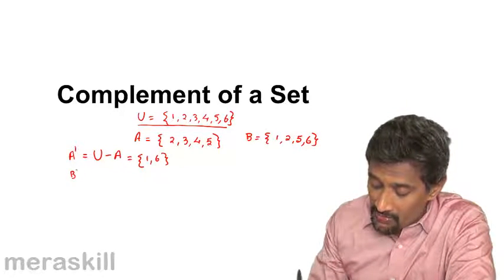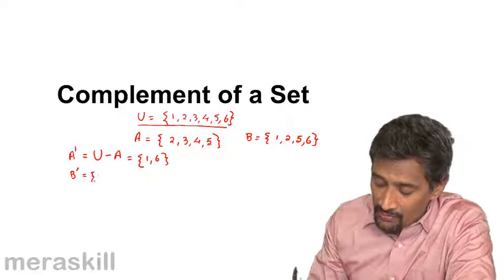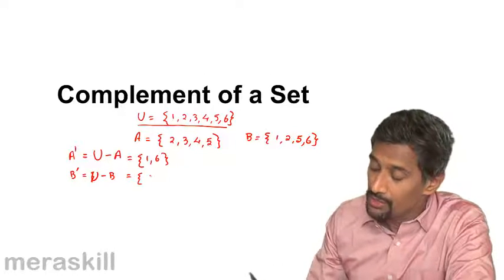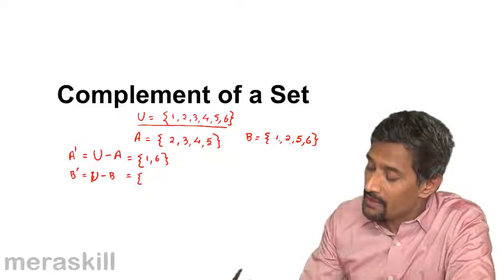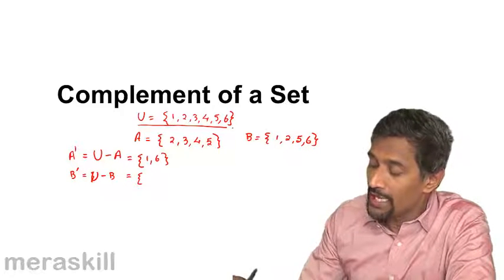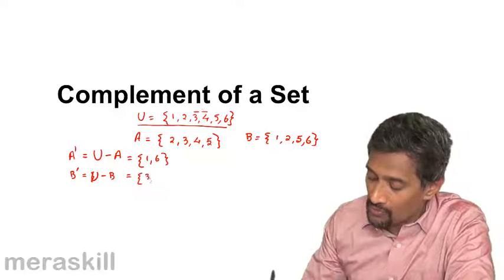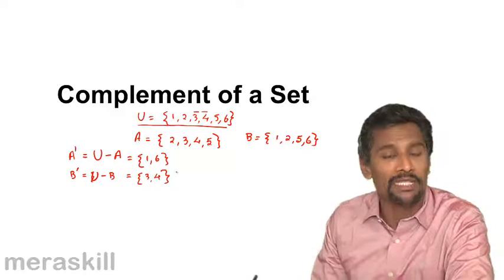Now let's see what is the complement of B, that is B dash would be U minus B. U minus B means everything in U other than 1, 2, 5 and 6. So it would be 3 and 4. So 3 and 4 would be B dash complement.